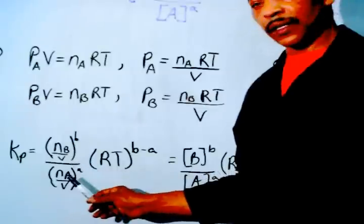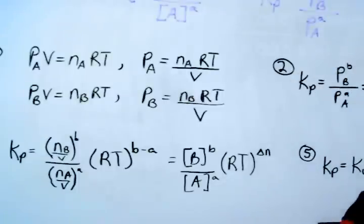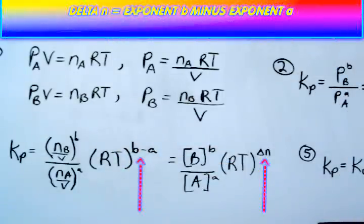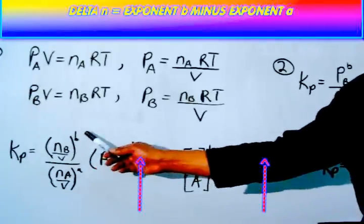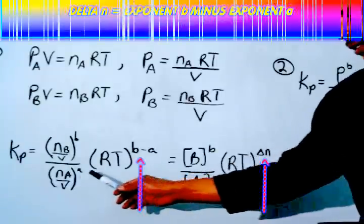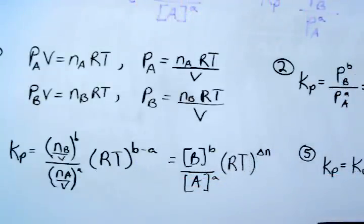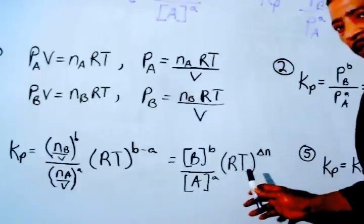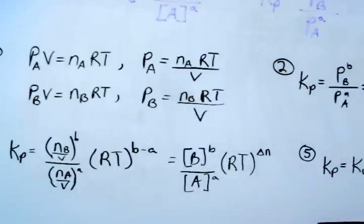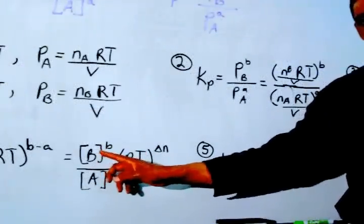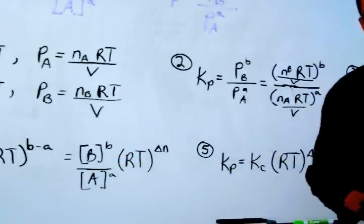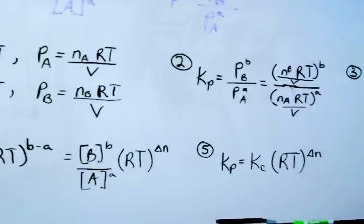Since moles divided by volume is also known as molarity, we may now rewrite this part of the formula by writing concentration of B raised to the b power, divided by concentration of A raised to the a power. The Δn represents the change in moles, which is determined by the balanced equation. Since the concentration of products raised to a power divided by the concentration of reactants raised to a power represents Kc, the Kp expression now becomes Kp equals Kc times RT raised to the Δn power.